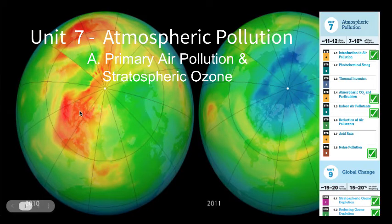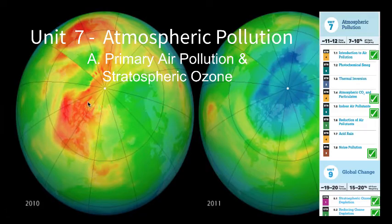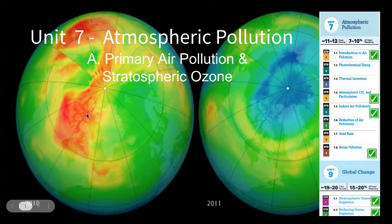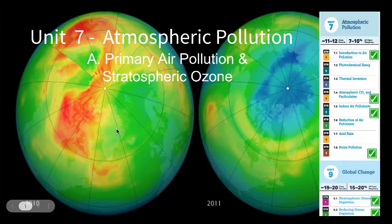Hey class, welcome back to our last unit set of notes, unit 7. We'll be focusing on atmospheric pollution in this unit. Today we'll begin with primary air pollution and begin our discussion of stratospheric ozone as well as the depletion of that stratospheric ozone layer — the process and how that occurs.